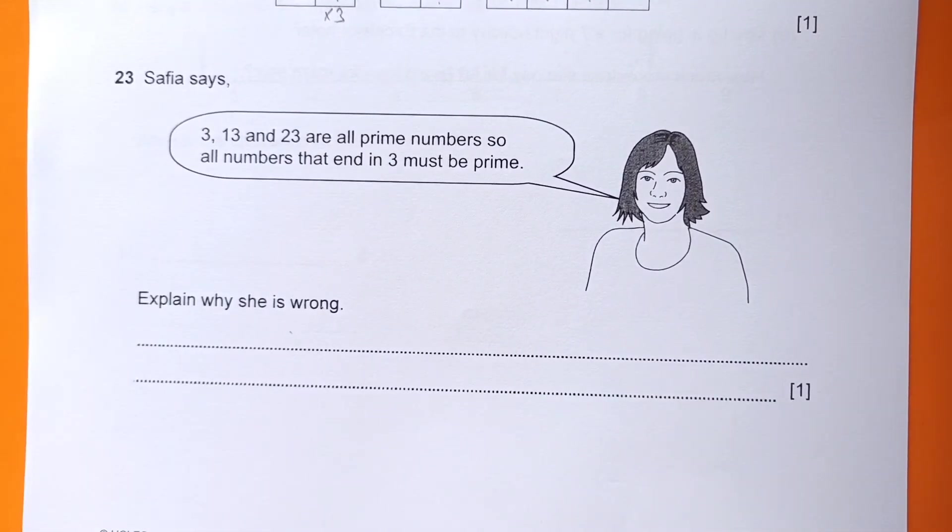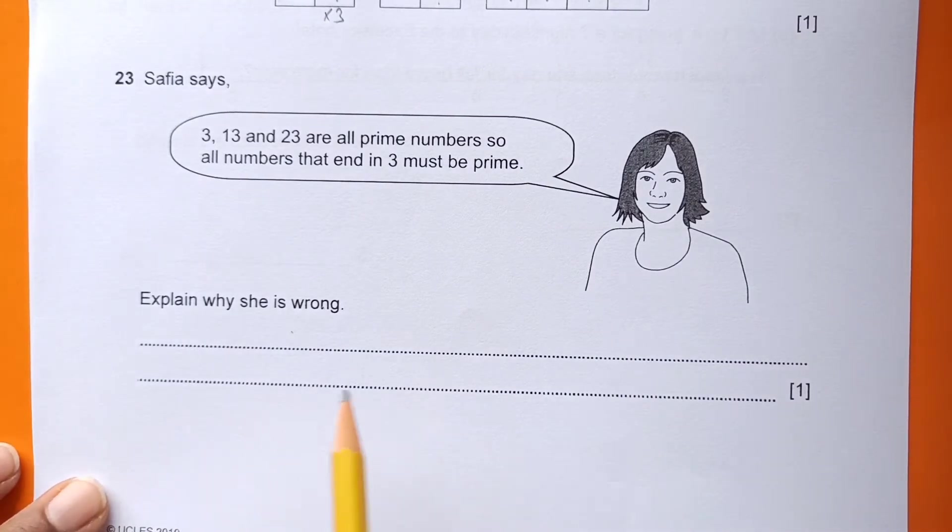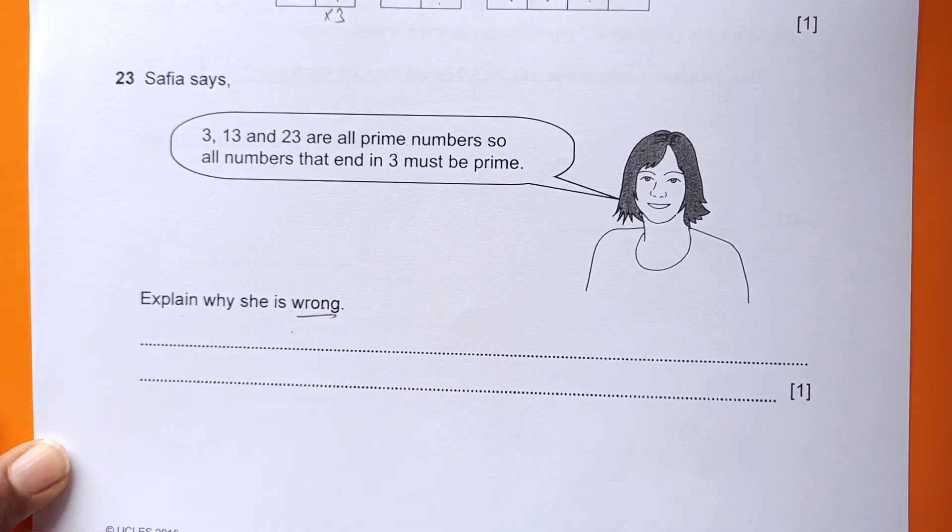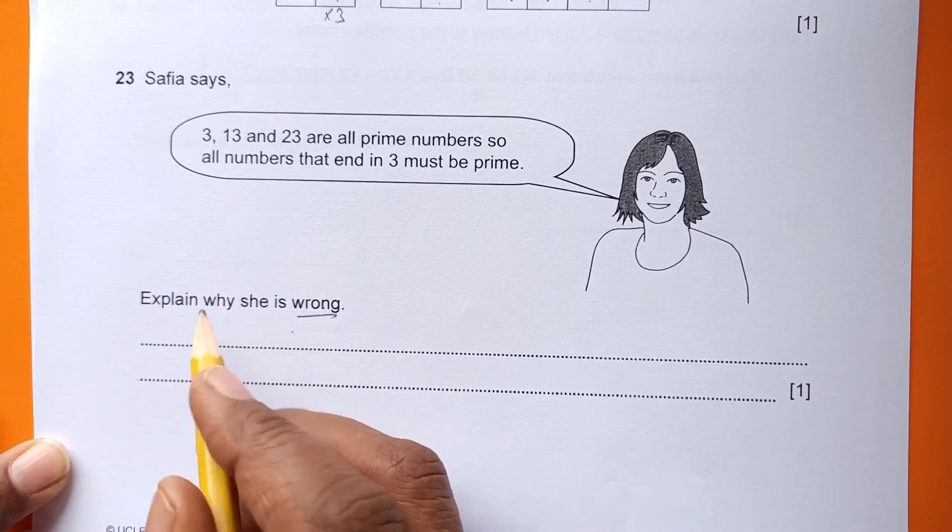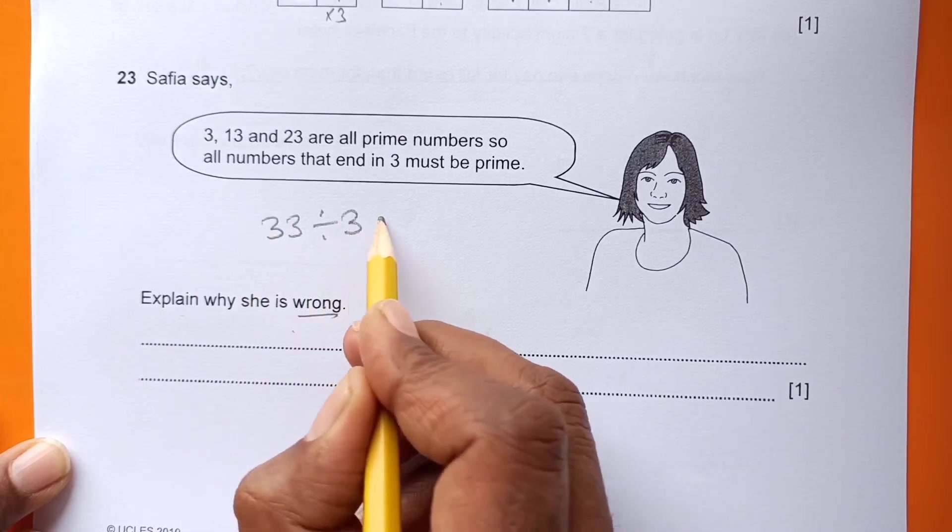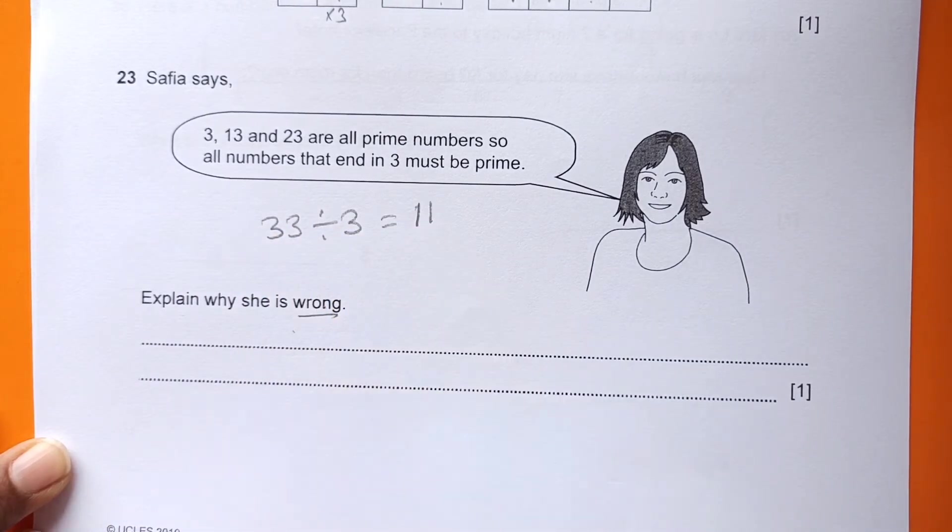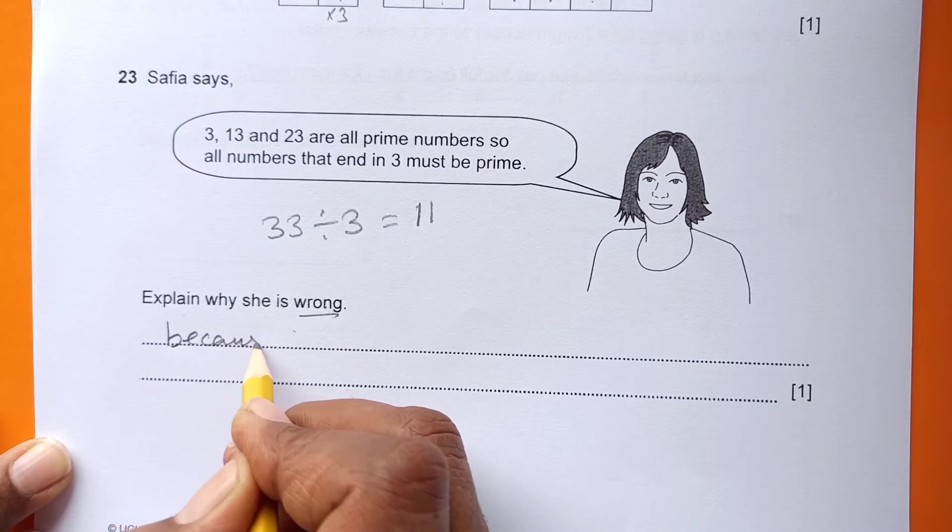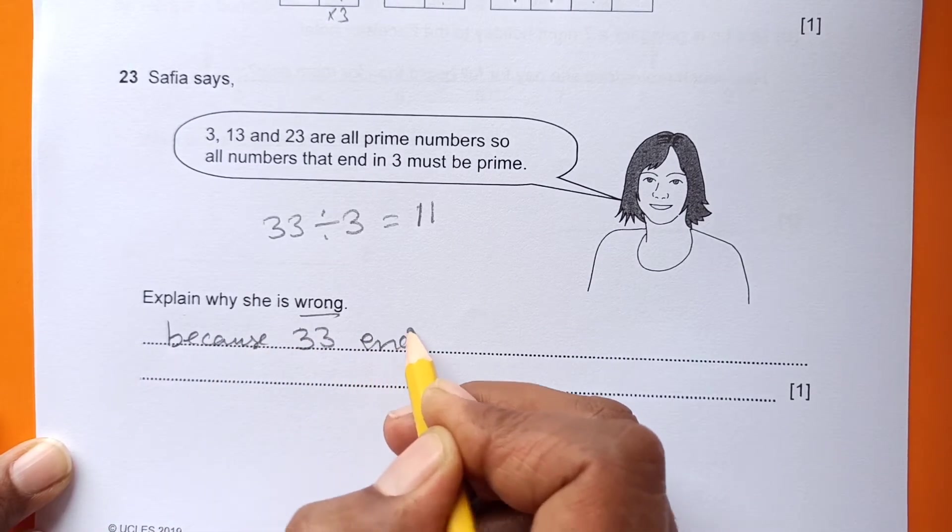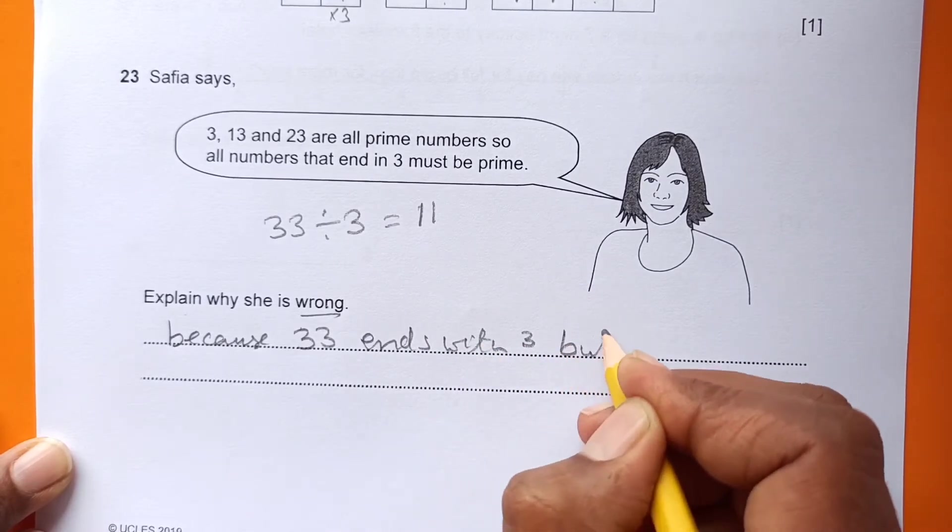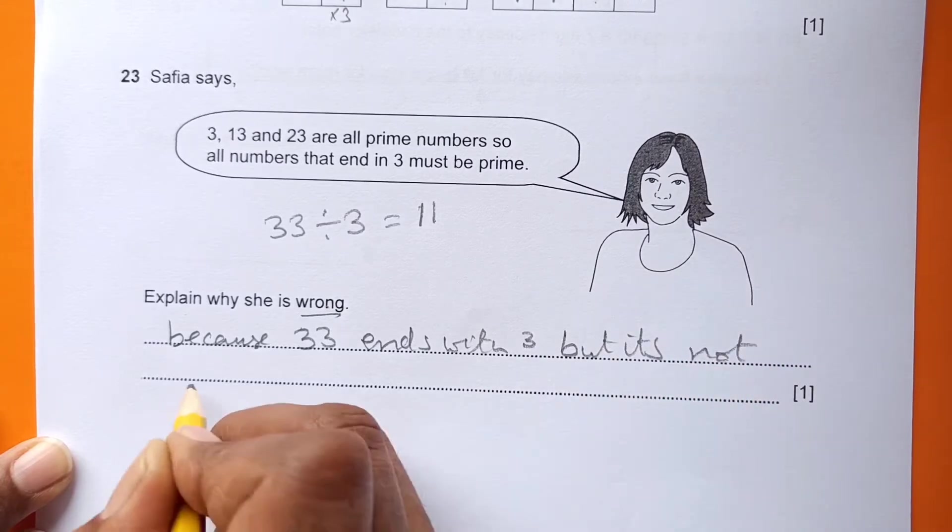Number 23: Safia says 3, 13, and 23 are all prime numbers, so all numbers that end in 3 must be prime. This is not correct. Explain why she is wrong. We can give one example - because 33 ends with 3 but it's not a prime number. If you divide 33 by 3, you can easily divide it, so she is wrong.